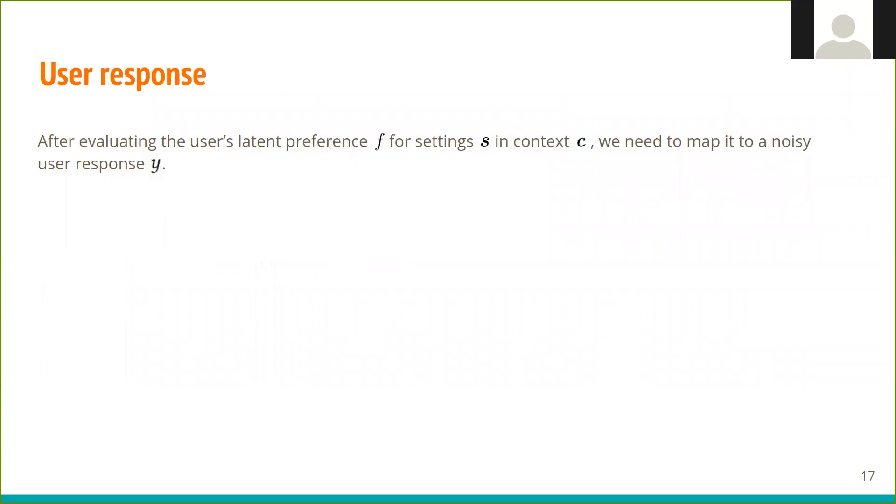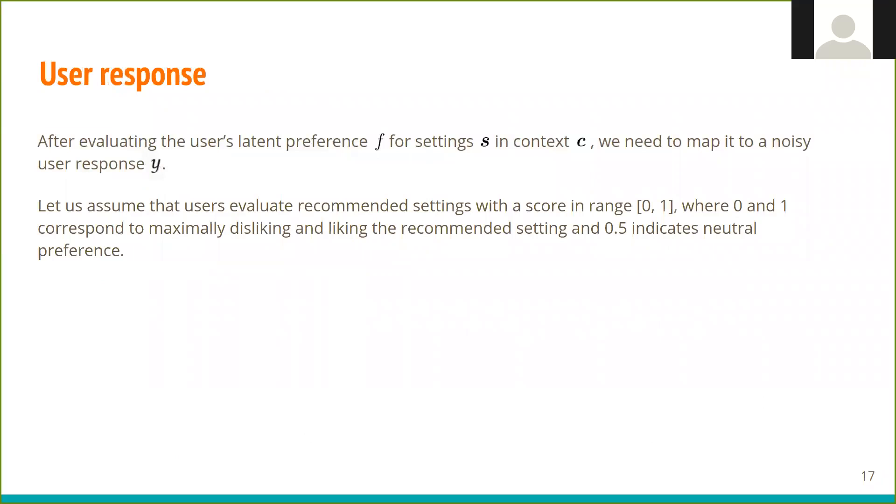Finally, we want to be able to map between users' latent preference F in given context and settings to a noisy user response Y. In this example, we assume that user response with a score in range from 0 to 1, where 0 and 1 correspond to maximally disliking and liking the recommended setting, and 0.5 indicates neutral preference.